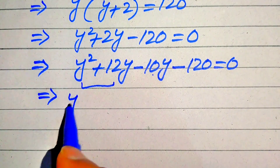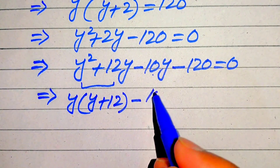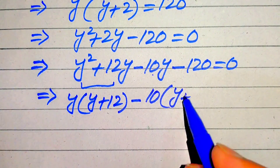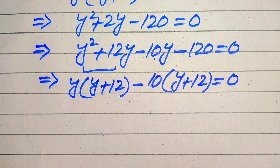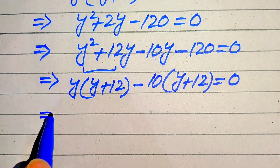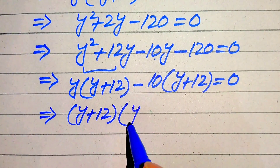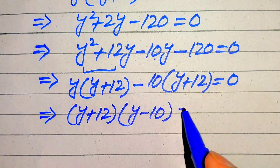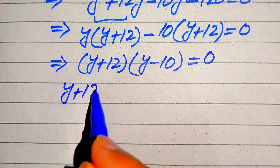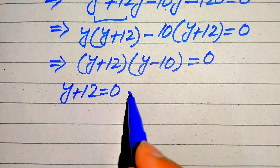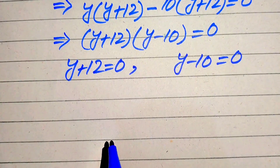Taking common Y from the first two terms gives Y(Y + 12), and taking common −10 from the last two terms gives −10(Y + 12). So (Y + 12)(Y − 10) = 0. We split into two cases: Y + 12 = 0 and Y − 10 = 0.